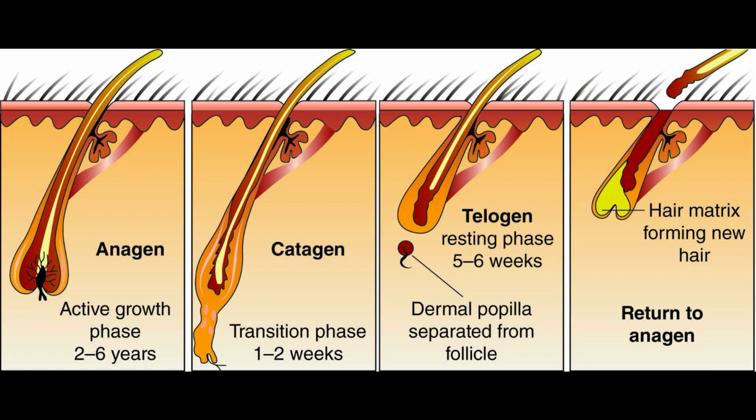Once regression is complete, the hair follicle enters the telogen phase, which is quiescent. The hair shaft is still present but the hair bulb is smaller and more inactive. Telogen follicles eventually lose their hair. Loss of the hair shaft should stimulate the hair bulb to begin replicating and contacting the dermal papilla to begin the anagen phase again.